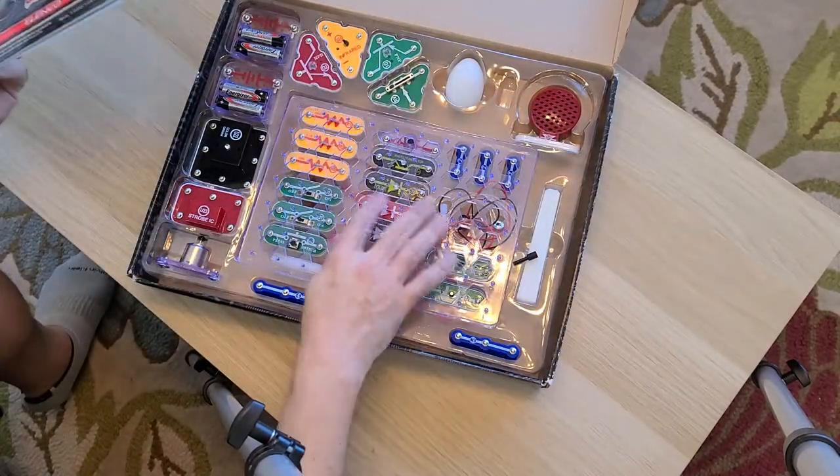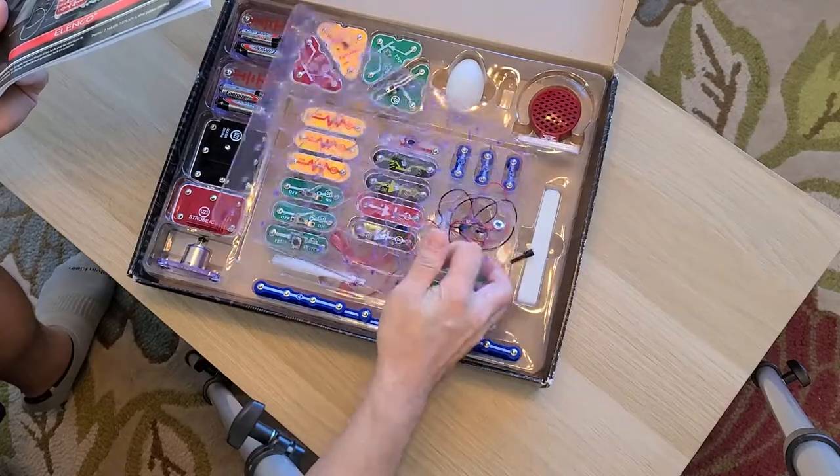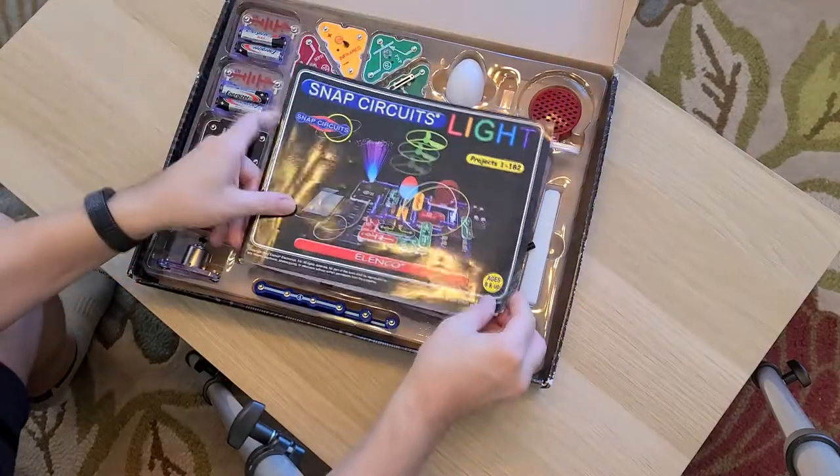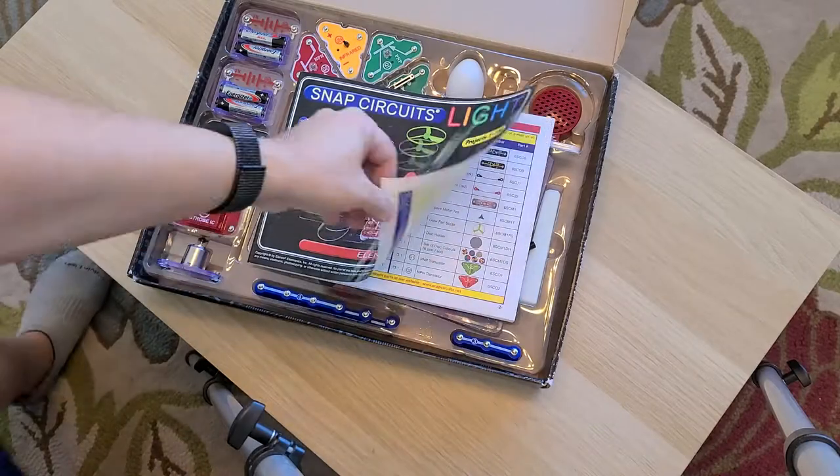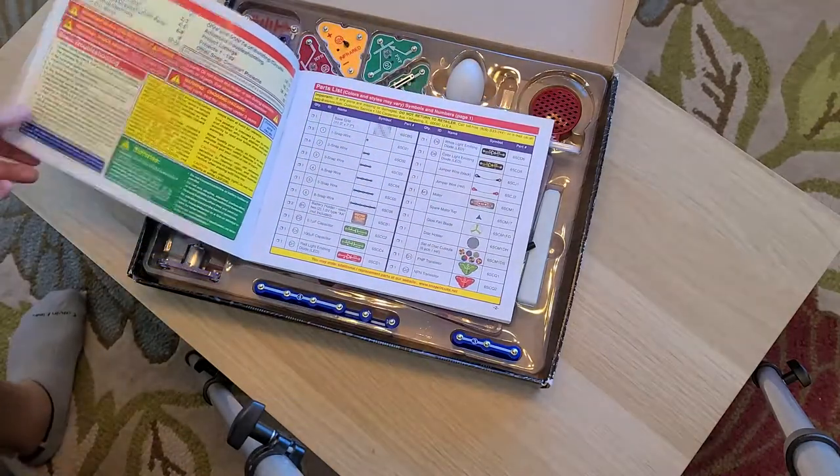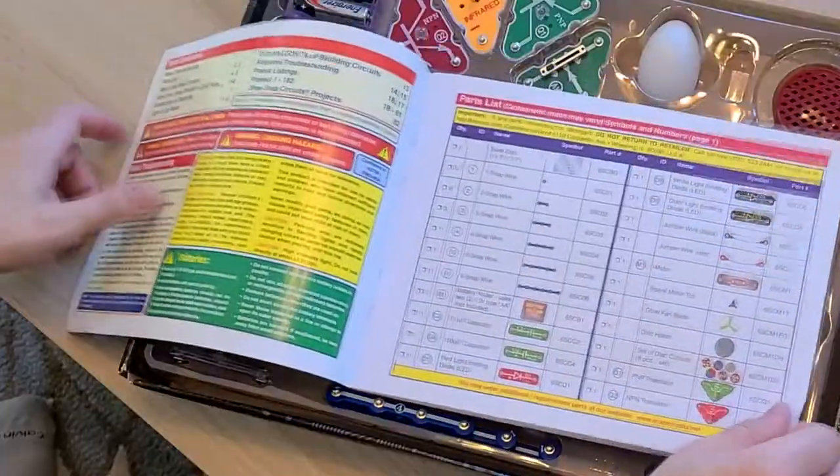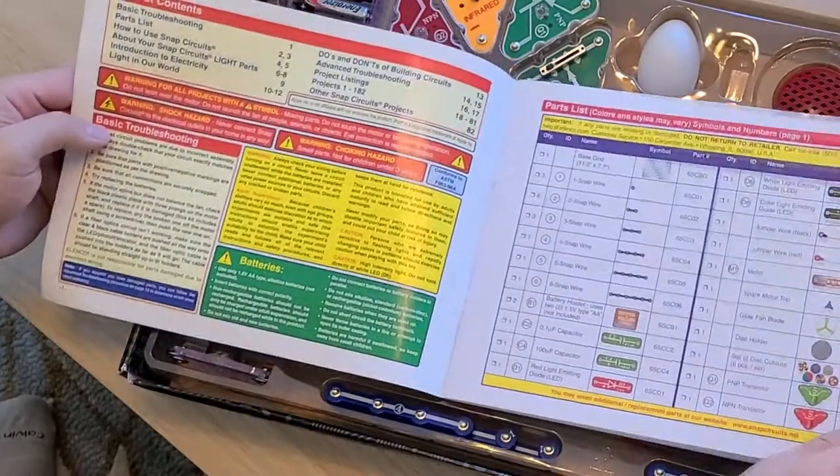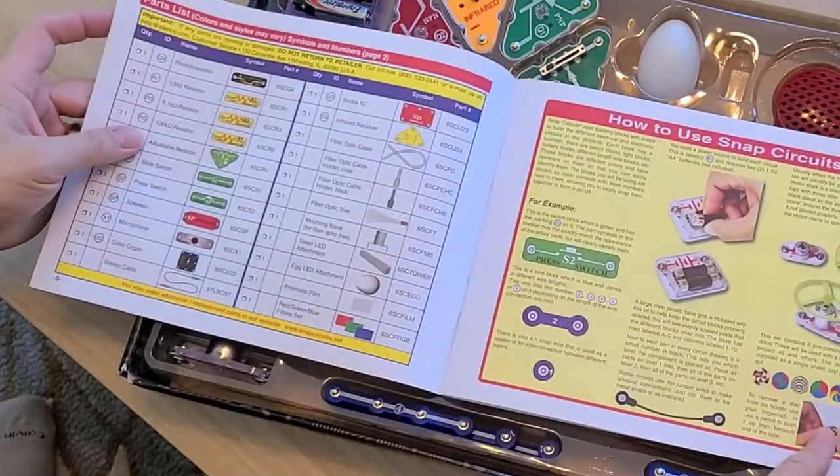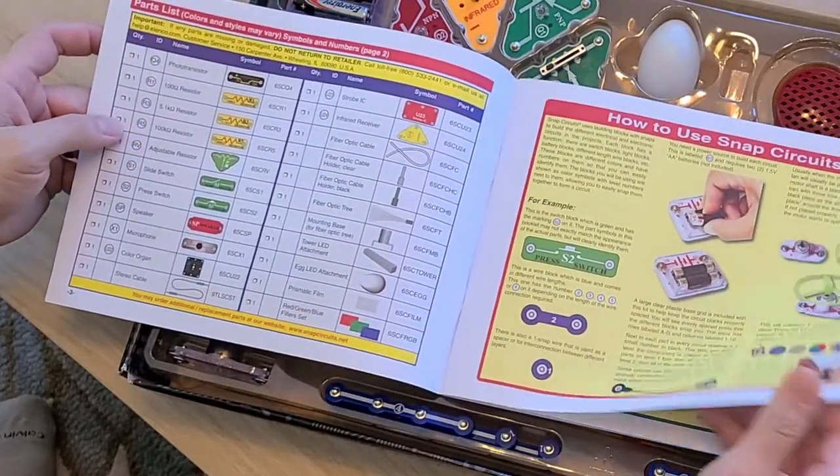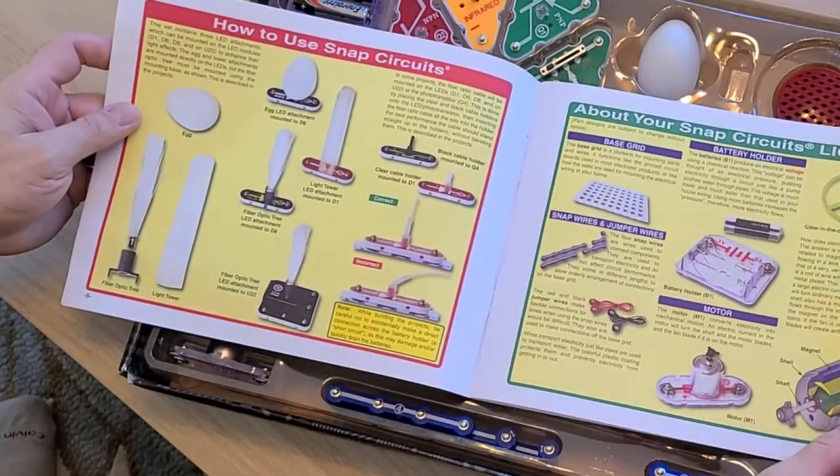Anyway, it's a great learning tool for electronics and actually light. One of the key features of this is actually it comes with a printed book, the Snap Circuits Light Kit, and it gives you some really terrific information. It's actually a course on electronics and light.